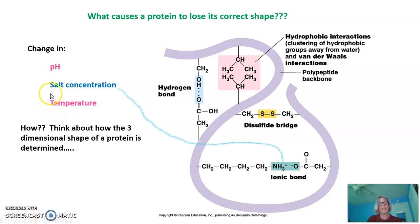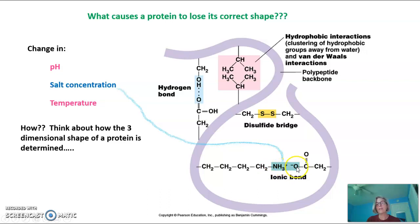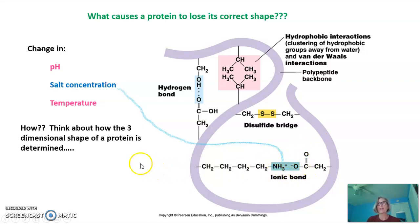If you changed the salt concentration — say you added a lot more salt to the environment — you'd have a lot of positive and negative charges floating around. That might mean this positive part of an R group, instead of being attracted to the negative of another R group, might float over to being attracted to one of the ions in solution. The same with the negative — it could be attracted to a positive ion in solution. That would disrupt the ionic bond.